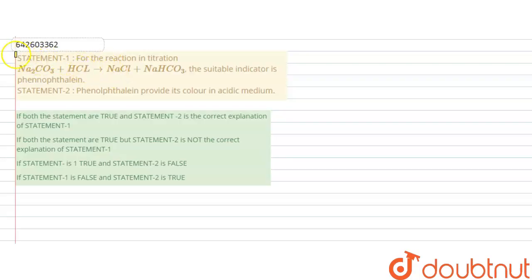The question is: Statement 1 says for the reaction in titration Na2CO3 + HCl gives NaCl + NaHCO3, the suitable indicator is phenolphthalein. And statement 2 says phenolphthalein provides its color in acidic medium.